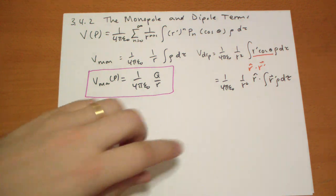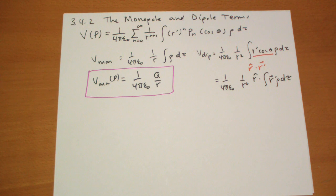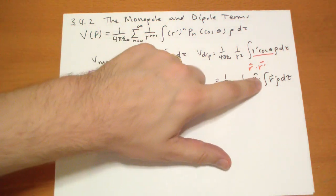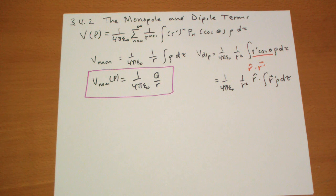And that basically says the integral, this is the sum of all the vectors pointing to the charge times the charge itself. So it's almost, if you're thinking mechanically, this is almost like the term that will give you the center of mass in some weird way if you think about that.